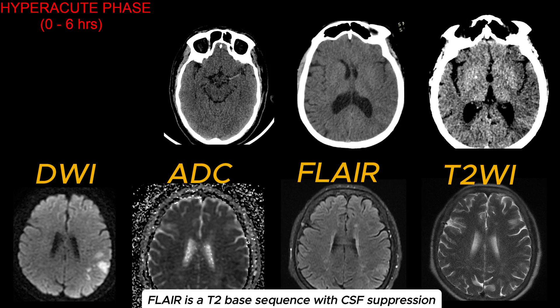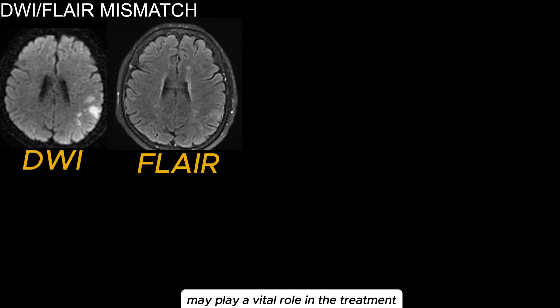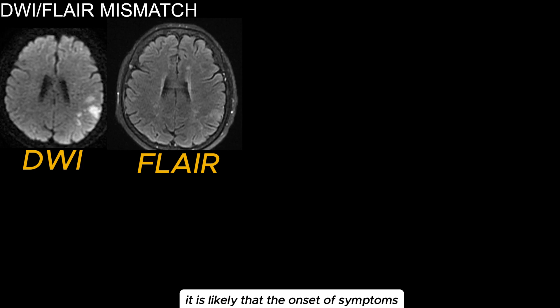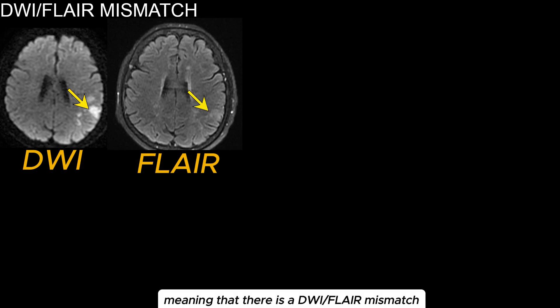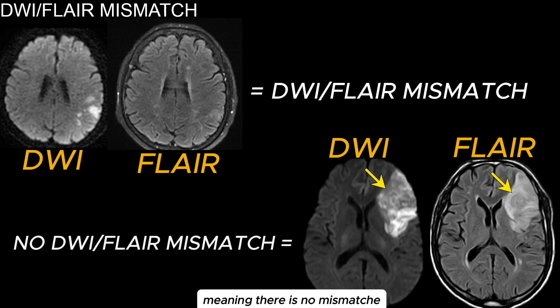FLAIR is a T2-based sequence with CSF suppression and therefore is not affected by the partial volume effect from the CSF. These FLAIR changes may play a vital role in treatment, as the DWI-FLAIR mismatch can be used to estimate viable brain tissue. The majority of patients will have FLAIR changes after 6 hours, so if the FLAIR changes do not match the DWI, it is likely that the onset of symptoms is within the last 6 hours. Here the changes are much more prominent on the DWI compared to FLAIR, meaning there is a DWI-FLAIR mismatch. Compare it to this patient, where the changes on the DWI and FLAIR match perfectly, meaning there is no mismatch.